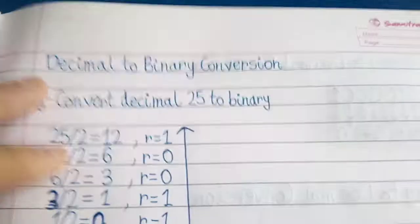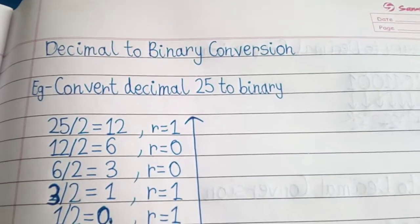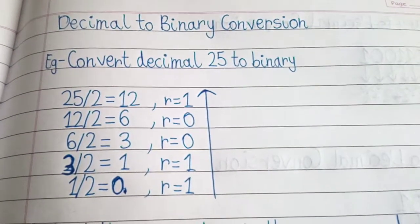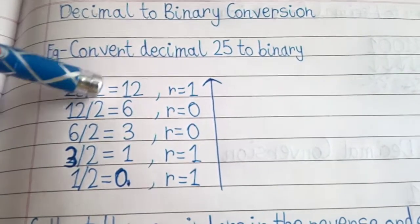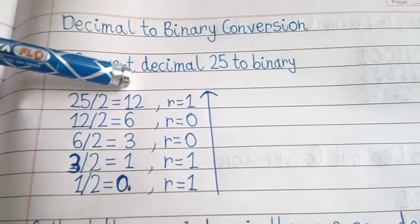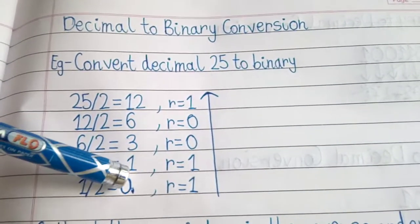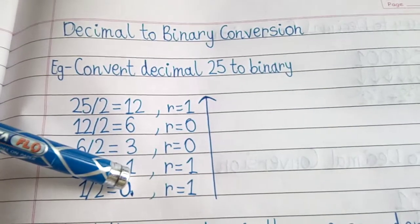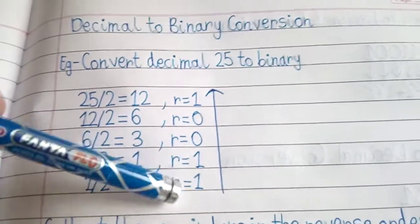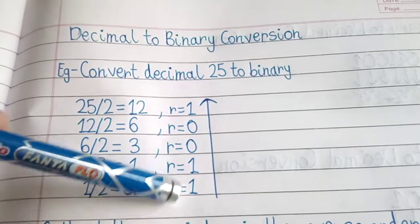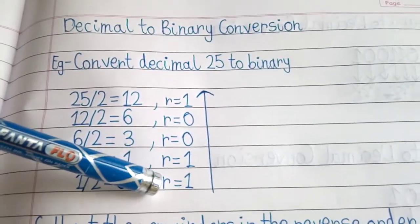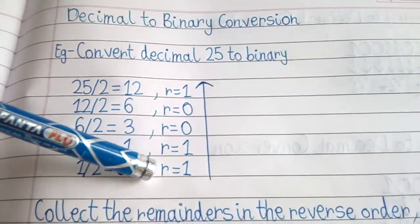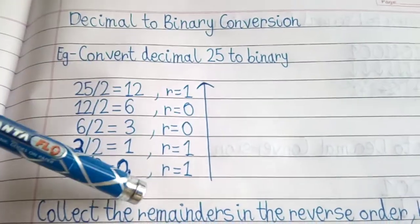In the previous video, I had explained the concept to convert from decimal to binary. It was very easy. If a number is given, we just have to divide that number by 2 till we get the quotient as 0. Once we get the quotient as 0, it's done. And then we have to write down the remainders. And to find the binary number, we have to collect the remainders in the reverse order.